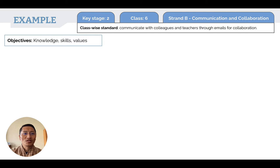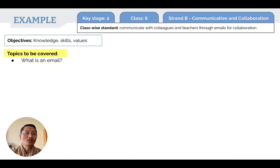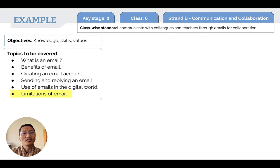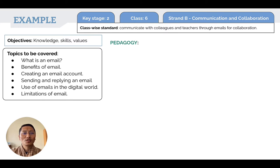After listing the objectives, the next step is to identify the topics to be covered. The topics listed here are: what is an email, benefits of email, creating an email account, sending and replying to an email, use of emails in the digital world, and finally limitations of email. The next step is to identify the pedagogy for this standard.